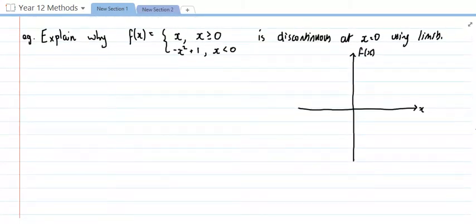So let's go on. Explain why f of x equals x where x is greater than or equal to 0 and negative x squared plus 1 where x is less than 0 is discontinuous at x equals 0 using limits. First thing I'm going to do in a question like this is I'm going to sketch it.